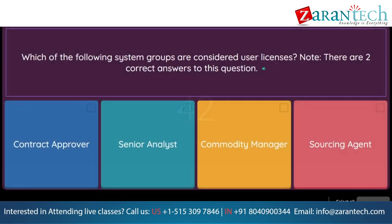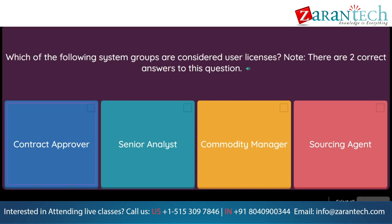Question: Which of the following system groups are considered user licenses? Note, there are two correct answers to this question. Option 1: contract approver. Option 2: senior analyst. Option 3: commodity manager. Option 4: sourcing agent.